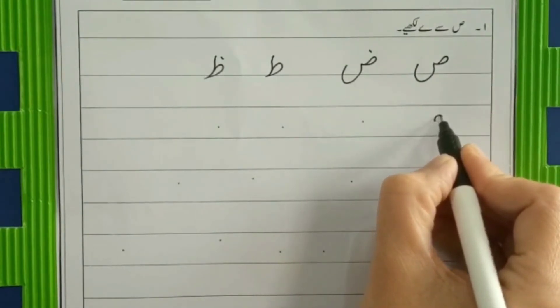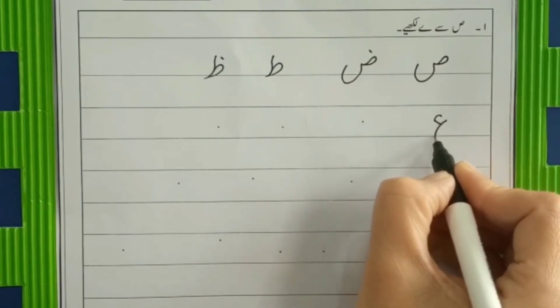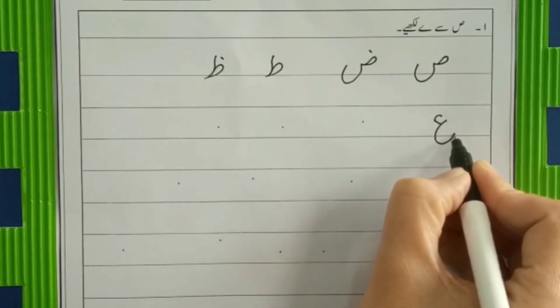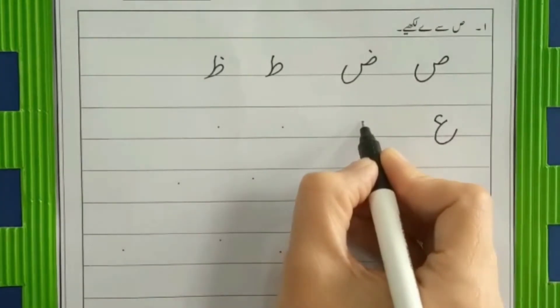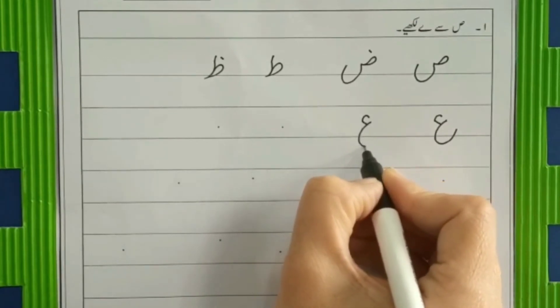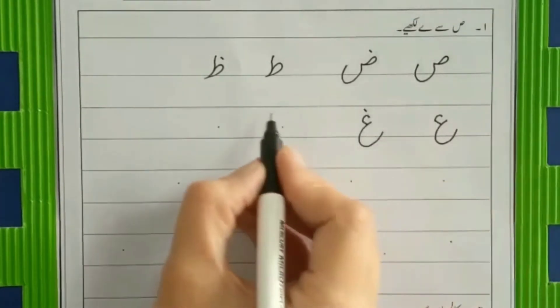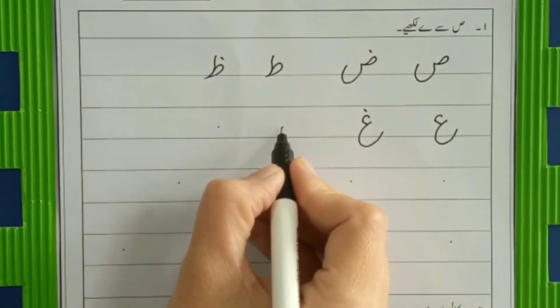We will make a head of it, then make its big belly. Aen hai. Aubara. Same like aen with one dot.